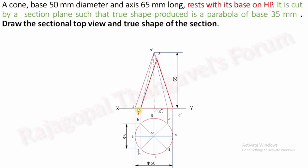Now we will know the next step. You have to convert the remaining portion of the solid into thick lines. O dash A dash is the removed portion; the remaining portion of the solid changes into continuous thick lines. Similarly in the top view, this part is the removed portion and the remaining portion must be converted into continuous thick lines. After converting into continuous thick lines, we have to identify the cutting points of the section plane.